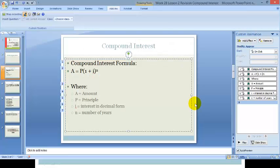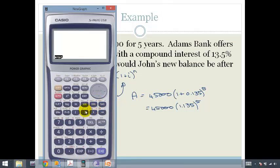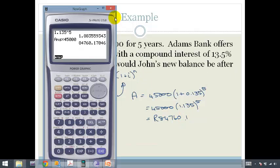So we're going to get our calculator out. We have 1.135^5 times 45,000, and we end up with 84,760 rand and 17 cents. So that becomes 84,760 rand and 17 cents.